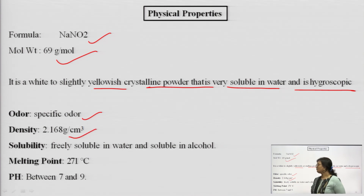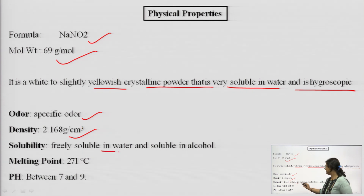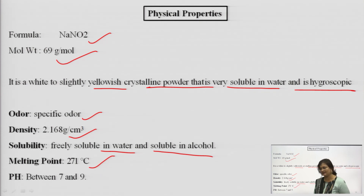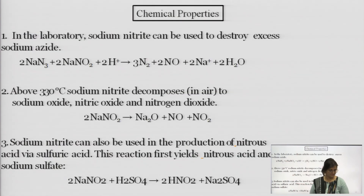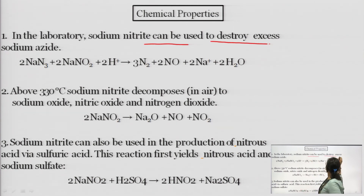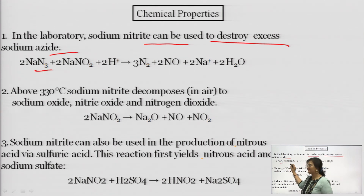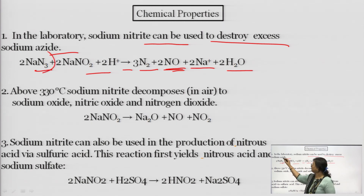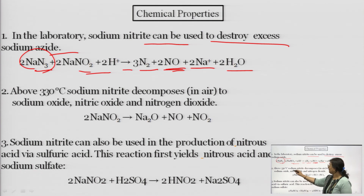Another source of nitrite in the body is nitric oxide — an amazing chemical the body uses to control blood pressure, kill tumour cells, and heal wounds. Sodium nitrite is written as NaNO2, has a molecular weight of 69 grams per mole. It is white to slightly yellowish crystalline powder, very soluble in water, and hygroscopic in nature with a specific odor. The density is 2.186 g/cm³. In the laboratory, sodium nitrite can be used to destroy excess sodium azides — NaN3 reacted with sodium nitrite gives 3N2, nitrous oxide, Na⁺, and 2H2O.